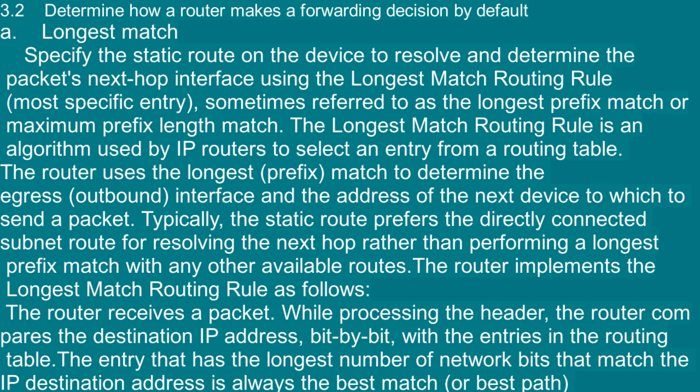The router implements the longest match routing rule as follows: the router receives a packet; while processing the header, the router compares the destination IP address bit by bit with the entries in the routing table. The entry that has the longest number of network bits matching the IP destination address is always the best match or best path, as shown in the example below.